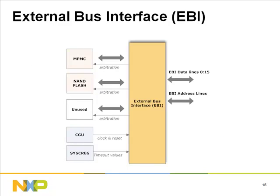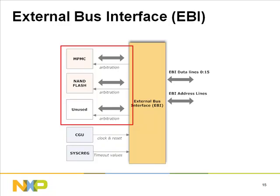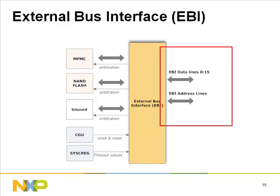The external bus interface EBI module acts as a multiplexer and handles arbitration between the NAND flash and SDRAM/SRAM memory modules connected through the MPMC. Its main purpose is to save external pins; however only data and address pins are multiplexed — control signals are not. Three external memory controller interface ports are available; on the LPC 313X only two are used: port 1 for the MPMC and port 2 for the NAND flash controller. A 16-bit address and data line connects to the external memories.